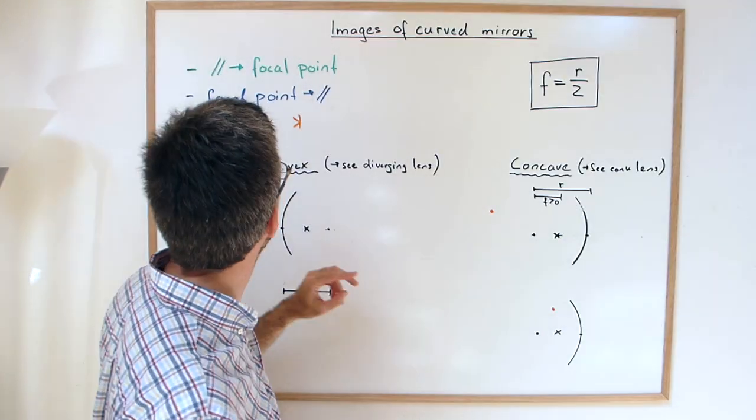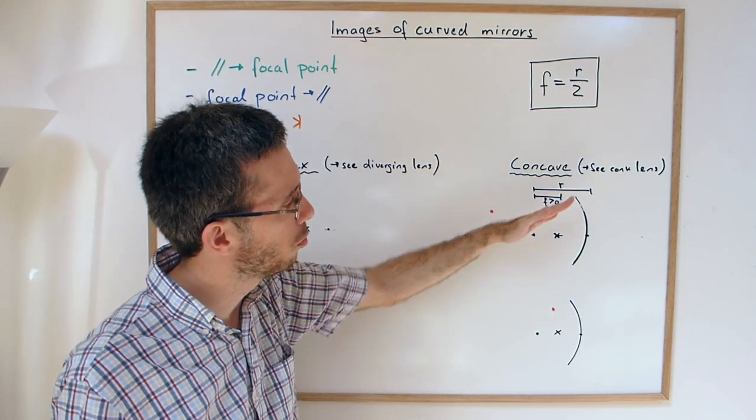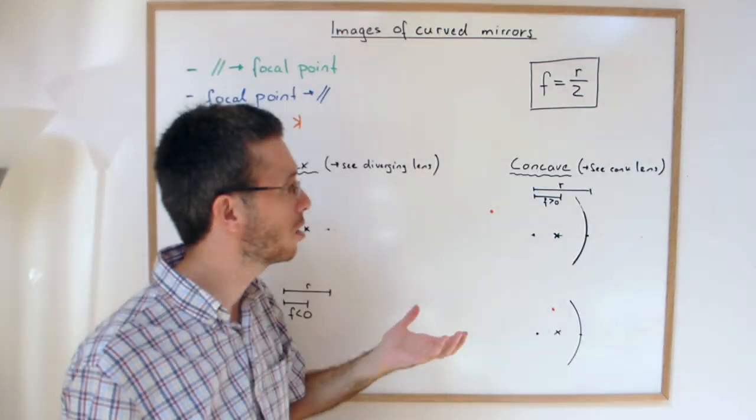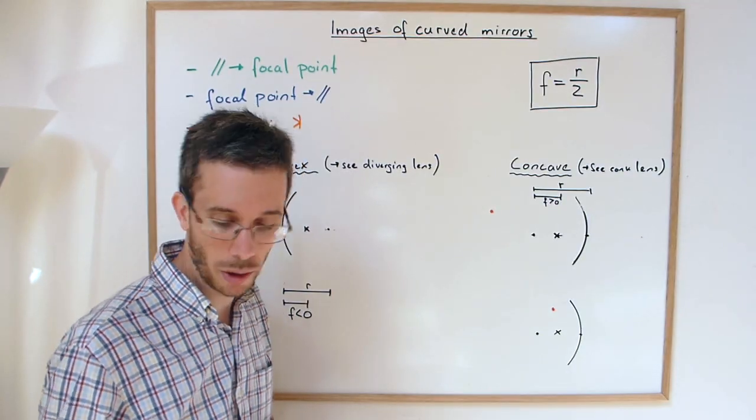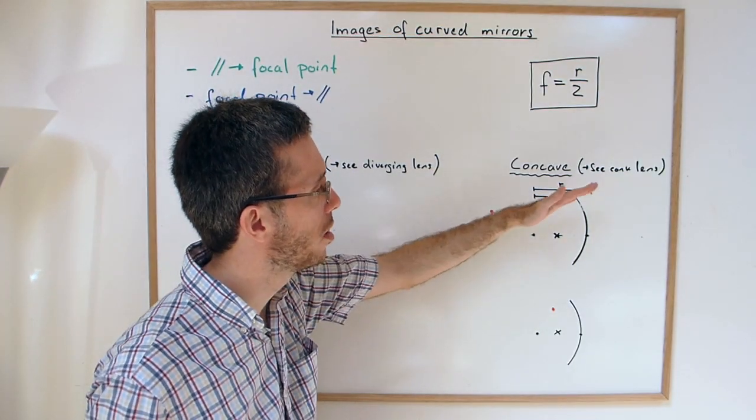The first special ray that we're using is the one that is parallel. Parallel rays go through the focal point. That's actually how we found the focal point in the first place, or the definition of the focal point. It's where parallel rays meet.